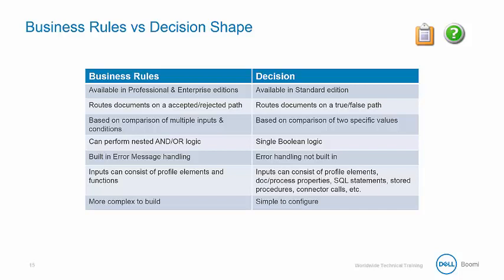Built-in error message handling is included in the business rules shape, where that is not included in the decision shape. In business rules, inputs can consist of profile elements and functions. In the decision shape, those inputs could be profile elements, document or process properties, SQL statements, stored procedures, or connector calls. The business rules shape is somewhat more complex to build, while the decision shape is relatively simple to configure.